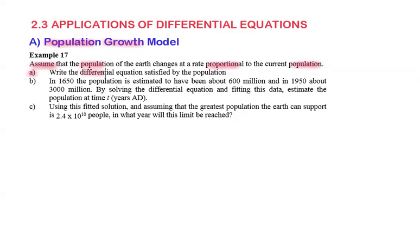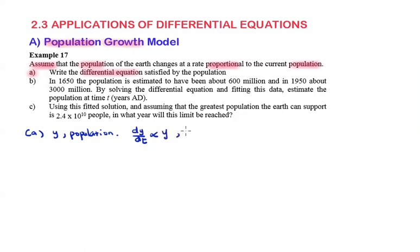Write the differential equation satisfied by the population. First of all, we let y be the current population. Given that the rate of change of the population is proportional to y, therefore dy/dt is equal to a constant k times y.